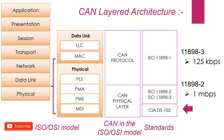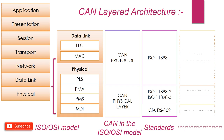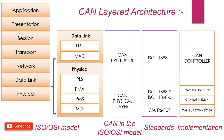CiA stands for CAN in Automation, which defines the specification for CAN connectors. As far as implementation is concerned, CAN controller and transceiver are implemented in software with the help of application, operating system, and network management functions.